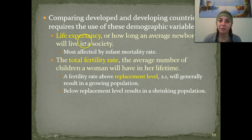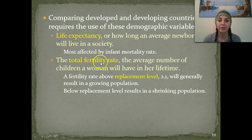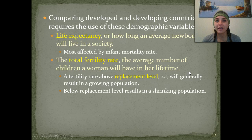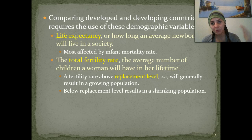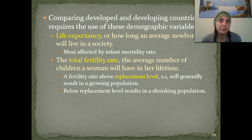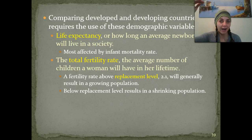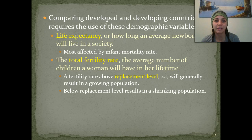Another term you need to be familiar with is the total fertility rate — the average number of children that a woman will have in her lifetime. Is her fertility rate high if she just has one child? No, that's going to be below the world average. If she has 10 kids, that's going to be much higher than the world average — that would be an extremely high fertility rate.